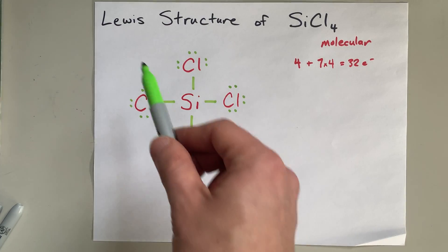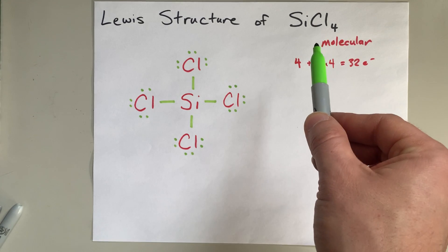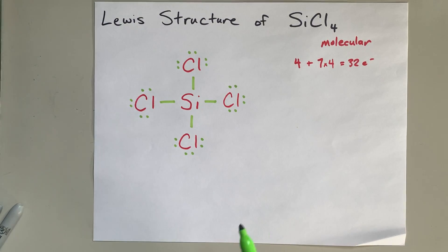This is the complete Lewis structure for silicon tetrachloride, which is a tetrahedral molecule. Thanks for being with me, and best of luck.